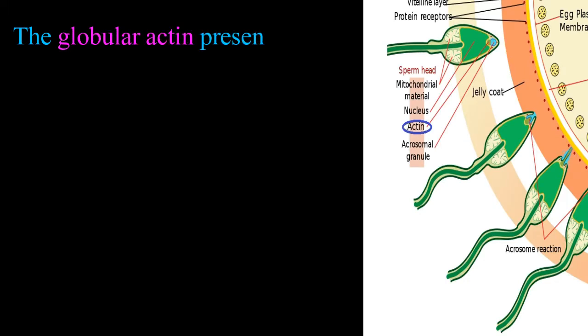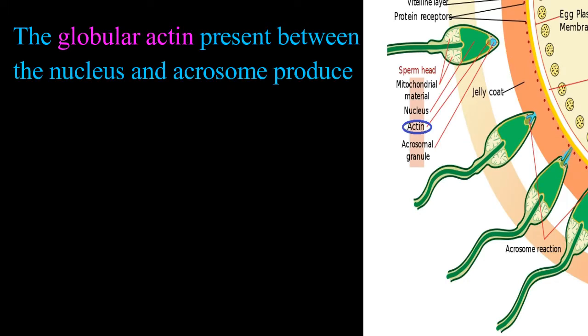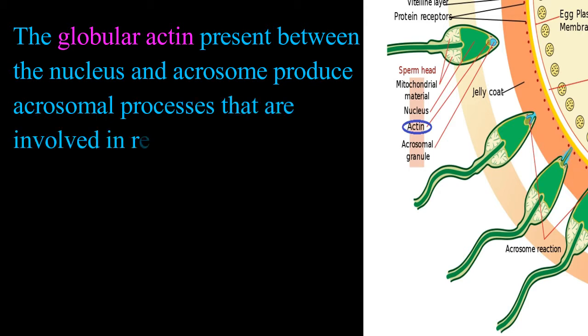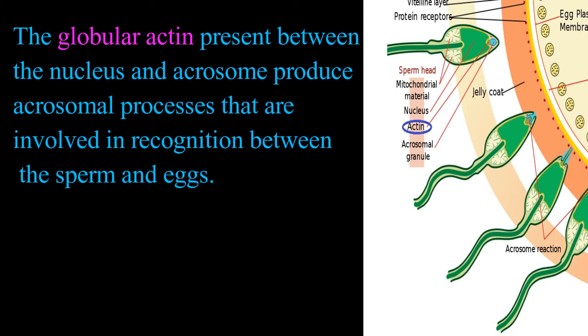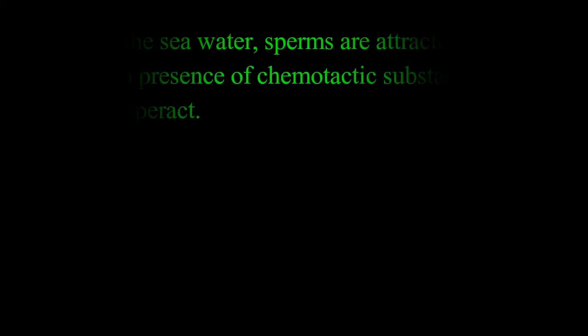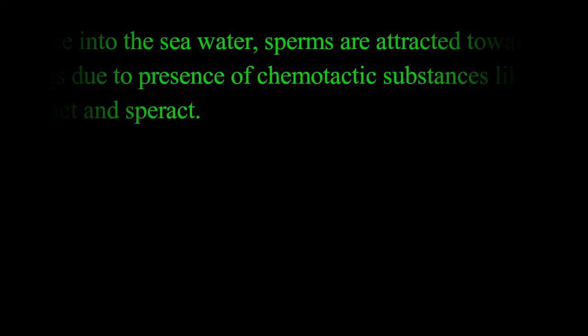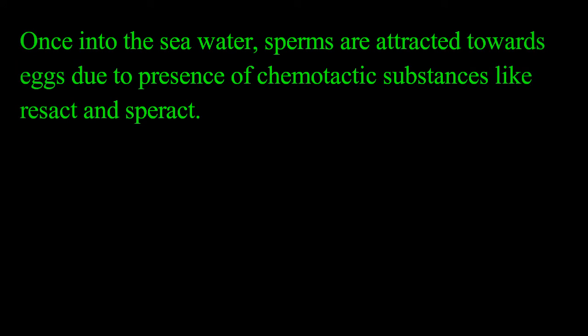The globular actin present between the nucleus and acrosome produces acrosomal processes that are involved in recognition between the sperms and the eggs. Once into the seawater, sperms are attracted towards the eggs due to the presence of chemotactic substances like RISACT and SPERACT.